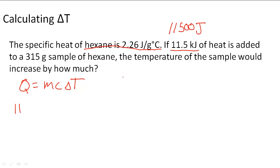To find delta T, what we have to do is Q divided by the mass and the specific heat. So that's going to be 11,500 joules divided by mass which is 315 grams, then also multiplied by the specific heat, 2.26 joules per gram degrees Celsius.